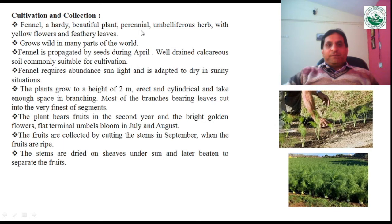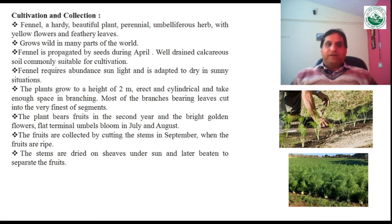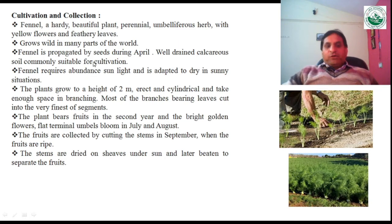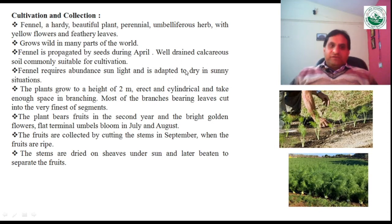Fennel is a beautiful perennial umbelliferous herb with yellow flowers and feathery leaves — feathery meaning hair-like leaves. It grows widely in many parts of the world. It is commonly propagated by seed propagation, carried out during the month of April. Well-drained calcareous soil is suitable for cultivation, and the plant requires an abundance of sunlight, adapted to dry and sunny situations.